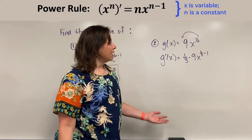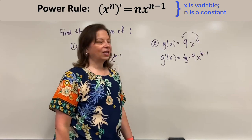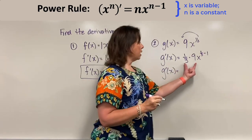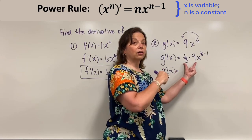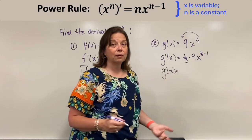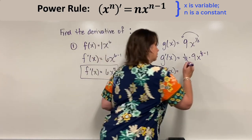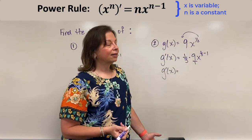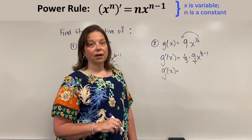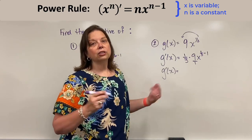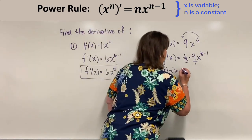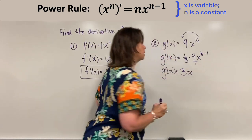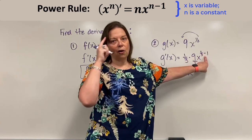So here I just do a little bit of simplification to tidy this up. I have g prime of x is equal to — we are in fact allowed to take 1 third and multiply it by the 9. Just a reminder, we have this really 9 over 1. So when I multiply these together, I get 9 over 3, which can reduce down to just a coefficient of 3. And then I have still my x. And then I have to think,